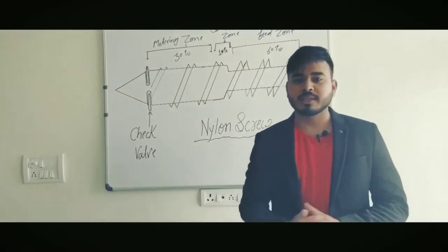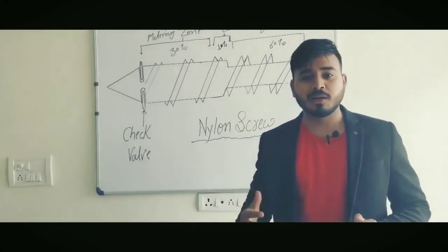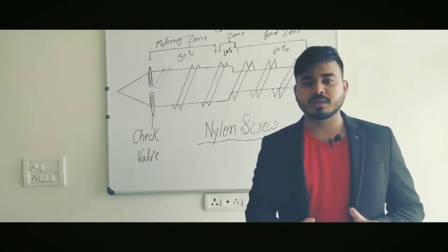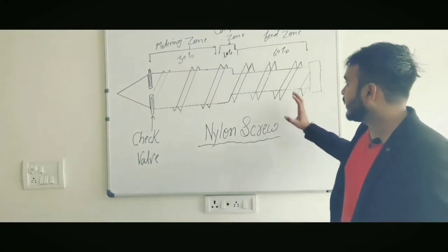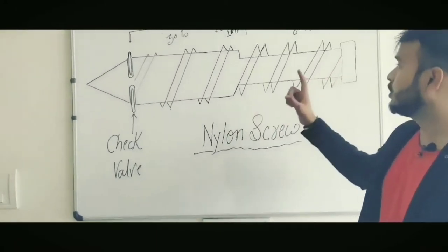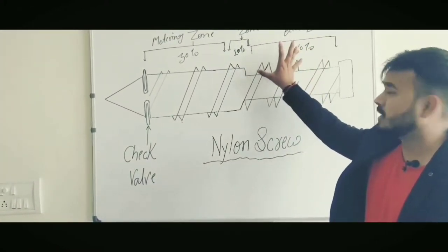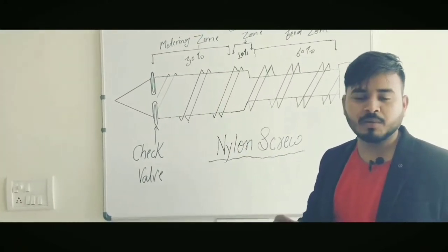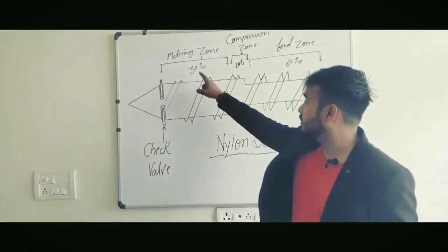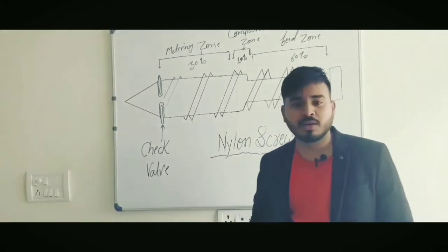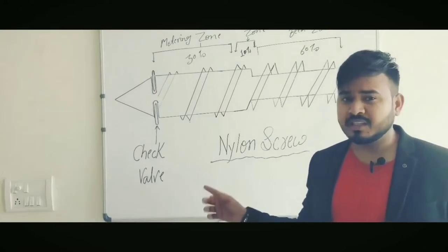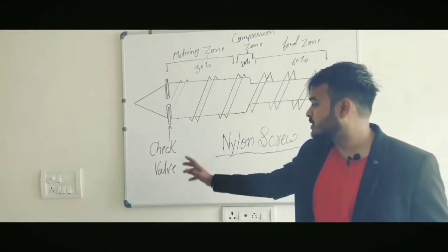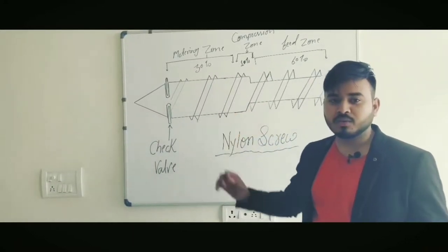Now coming to the nylon screw. Nylon screw is basically used for nylon material — the material known as polyamide. This screw is also divided into three zones: feed zone, compression zone, and metering zone. The feed zone has 60% of the screw area, compression zone covers 10%, and the metering zone covers 30% of the area. Very little compression is required for this type of screw. There is also a check valve to prevent backflow at the time of injection. All nylon products are made by this type of screw.